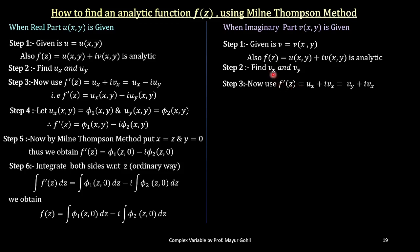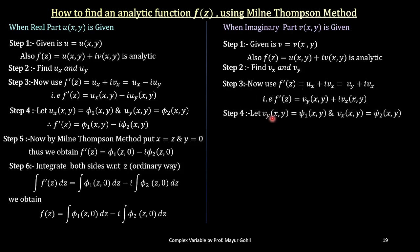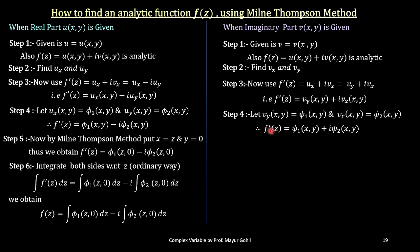Now we use the formula according to the partial derivatives that are found. So f'(z) equals v_y plus i·v_x. In a more elaborate form, f'(z) is the partial derivative of v with respect to y plus i times the partial derivative of v with respect to x. Now comes the relabeling step: v_y will be labeled as psi₁ and v_x will be labeled as psi₂. So we get f'(z) equals psi₁(x, y) plus i times psi₂(x, y).